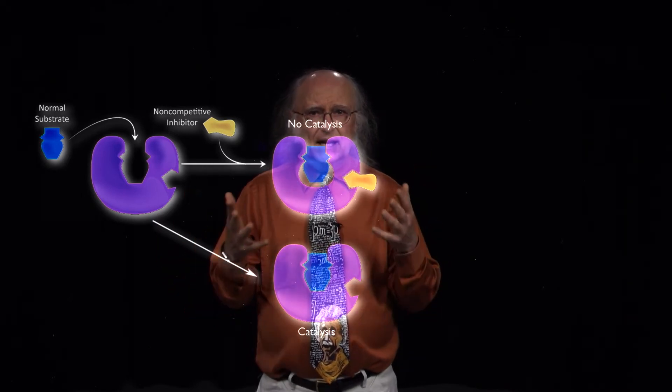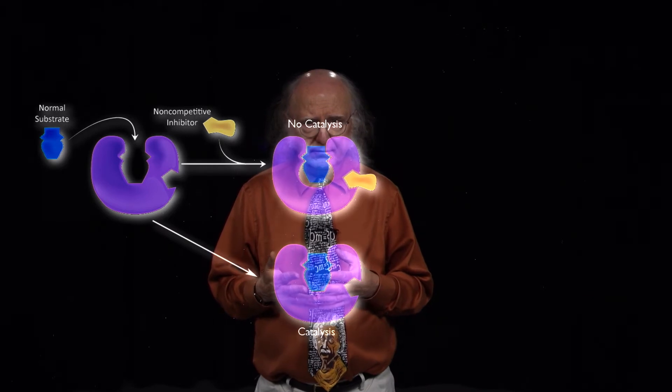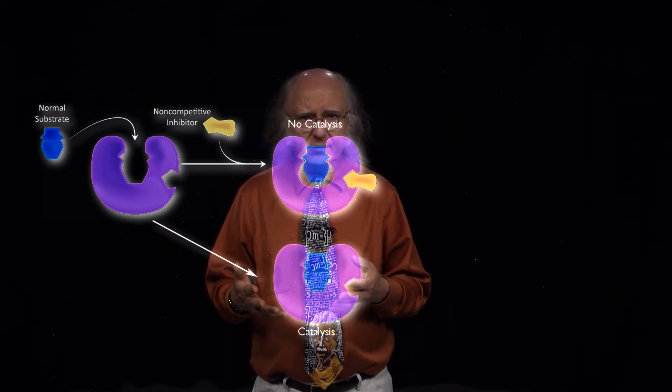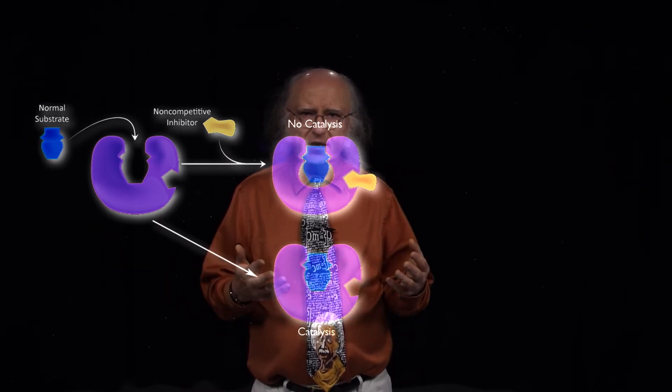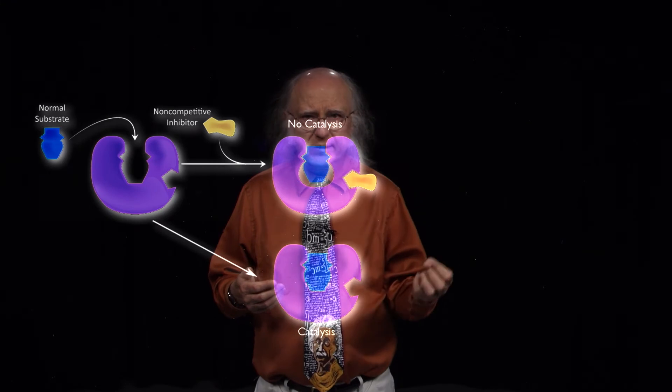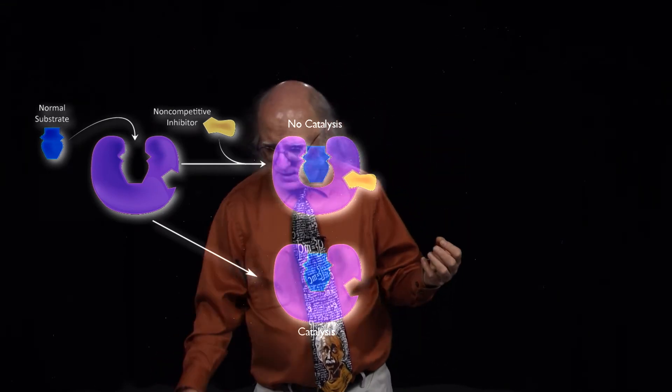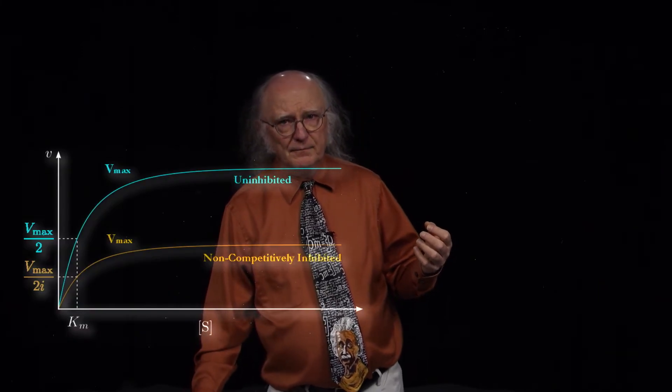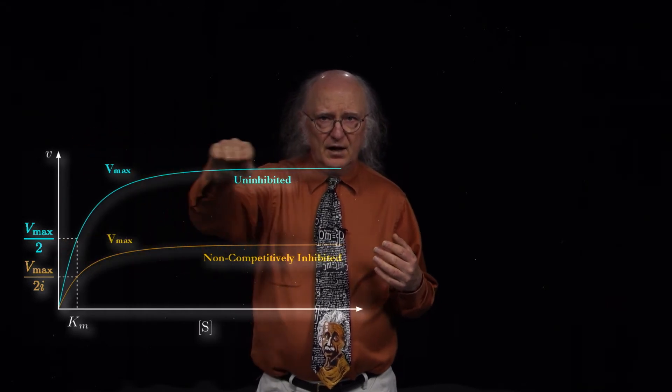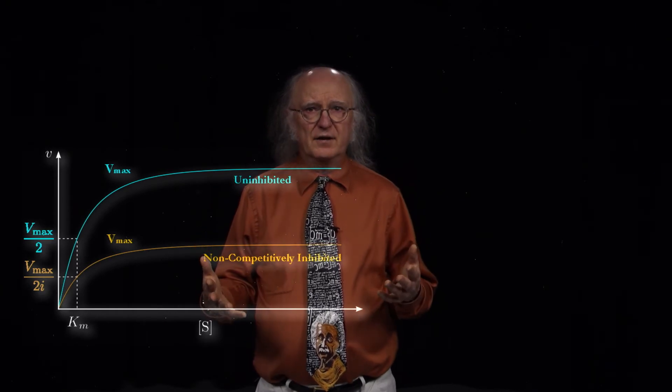In any non-competitive inhibition reaction, a fixed percentage of the enzyme is going to be lost. If you decrease the amount of enzyme, you decrease the Vmax, and that's exactly what's shown here. The uninhibited reaction has a higher Vmax than the non-competitively inhibited reaction. So non-competitive inhibition results in a lower Vmax.